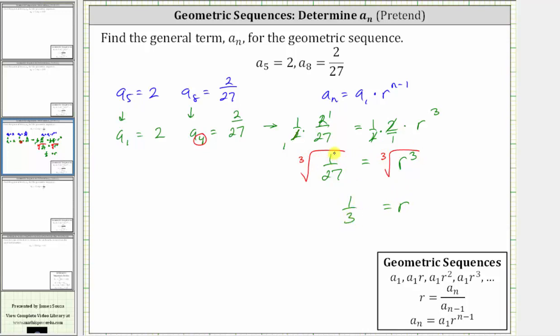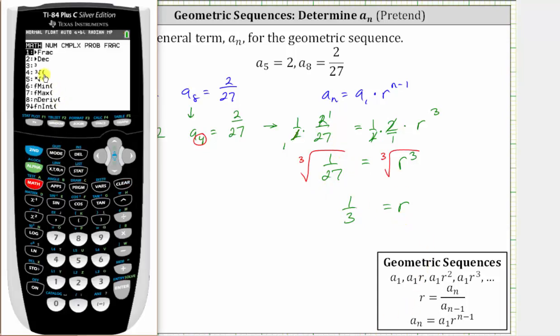Because 1 is equal to 1 cubed, and 27 is equal to 3 cubed. If we needed to, we could check this on the calculator. If we press math, and then number 4, this brings up the cube root, and then 1 divided by 27, enter, and then math, enter, enter, to convert back to a fraction.